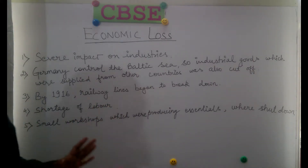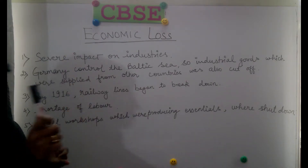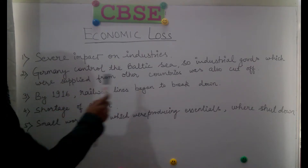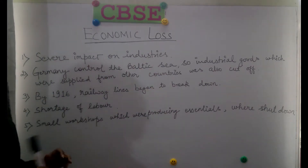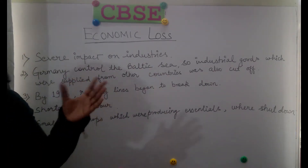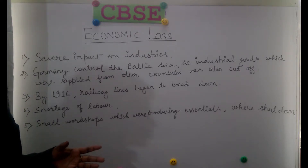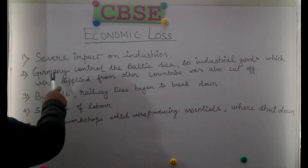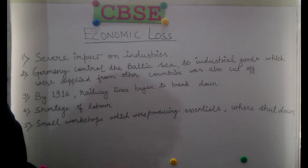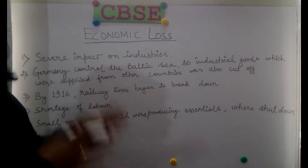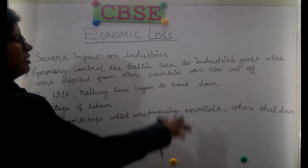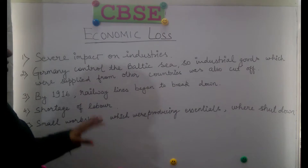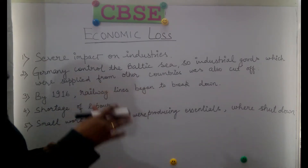Industries were severely impacted by the war. The second major issue was the Baltic Sea. Russia had been importing industrial goods from other countries via the Baltic Sea, but Germany controlled the Baltic Sea during the war. As a result, industrial goods were blocked and imports were banned, severely disrupting Russian industry.